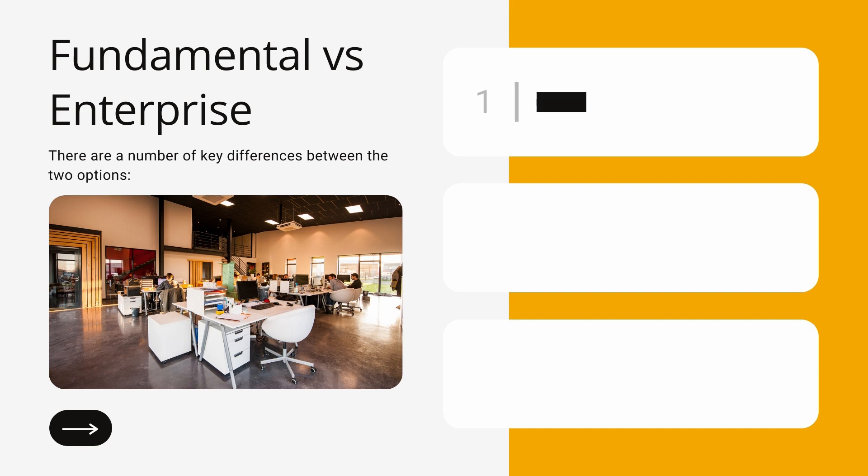So what is the difference between fundamental data regions and enterprise data regions? For most customers who require data regions and want all their data hosted in Europe or the US, fundamental data regions will solve that problem. But there are three key differences. The first is that you can't have multiple data regions within fundamental — in enterprise you can have a particular OU or group of users with data hosted in the US and another set hosted in Europe. That's not possible with fundamental; it's a blanket US or EU for the entire organization.